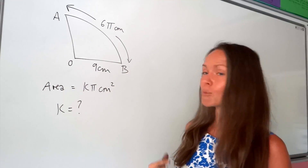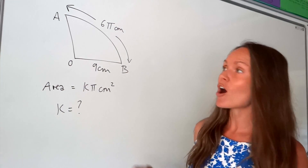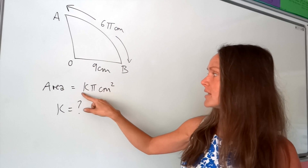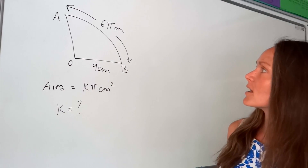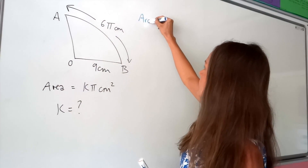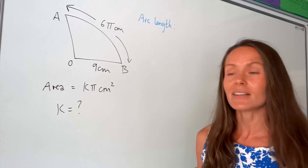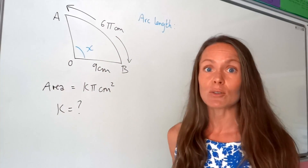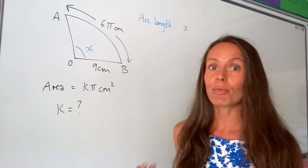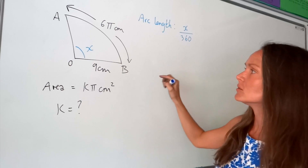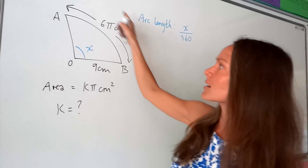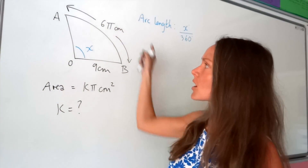In this final question we need to work out the value of K. We've been given the arc length as 6π and the radius as 9. The area is written in terms of K as Kπ, but we don't know what K is. I'll start by looking at the arc length since we know that value. To work out arc length we need to know how many degrees are inside the sector — we don't know, so I'll call them X. You write X out of 360, because you need to work out what fraction of a circle the sector is in terms of degrees. The arc length is just part of what would be the circumference of the whole circle.